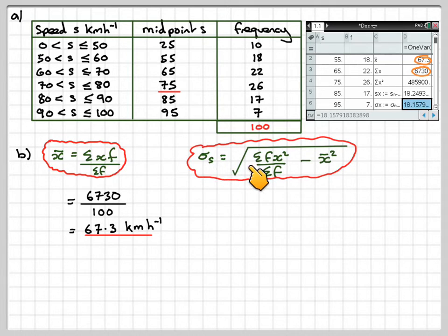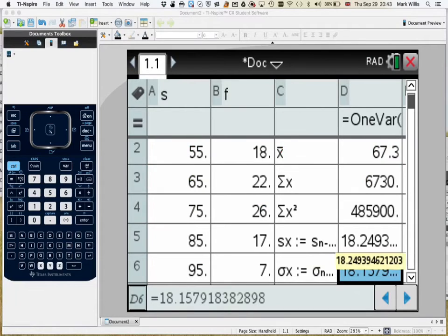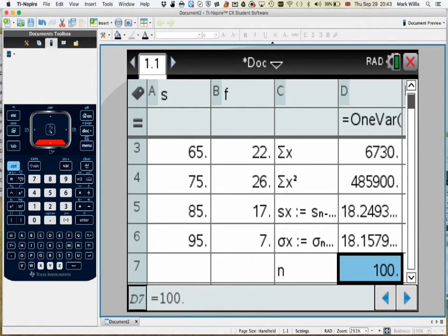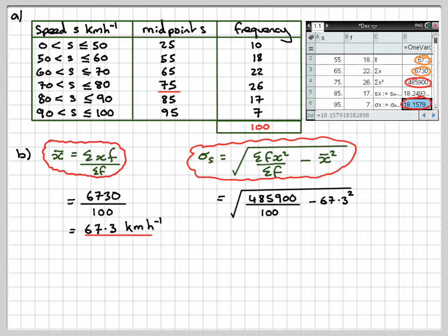The standard deviation is the square root of sigma F X squared over sigma F minus X bar all squared. So that's going to be equal to sum of F X squared is going to be that one. So 485,900 divided by sum of F, which is 100 from that one, and minus 67.3 squared. Now, we can just check on the calculator if we scroll down a little bit here, that we do have actually have the sum of the frequencies is 100. So that's going to give me that standard deviation, which is 18.2 kilometers per hour. You make sure you take the correct standard deviation, which is this one, sigma X, rather than this one. It comes with position number 6 on the table. Make sure you take the correct one.